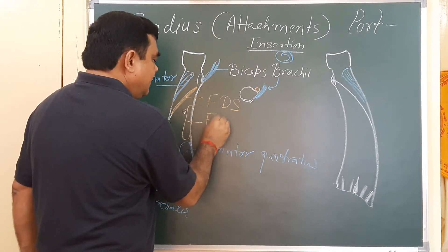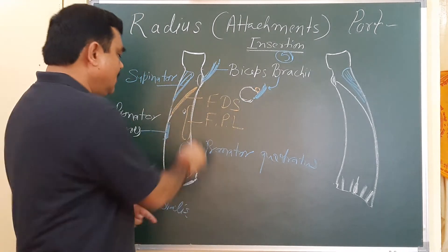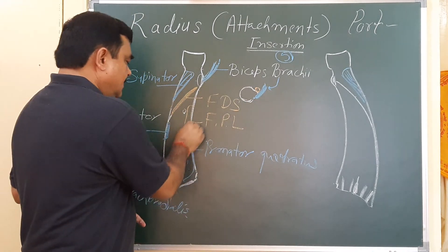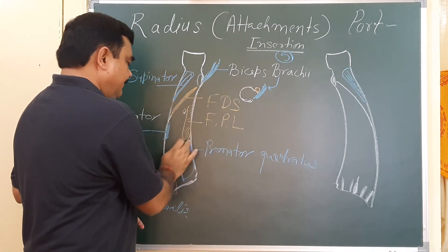Flexor pollicis longus takes origin here on the radius.